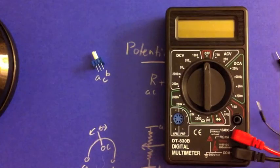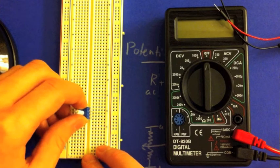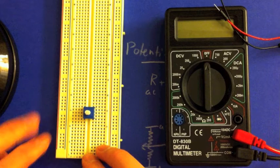So here we have a multimeter, breadboard, and a potentiometer. We go ahead and put the potentiometer in the breadboard, and the pins going from top to bottom are A, C, and B.